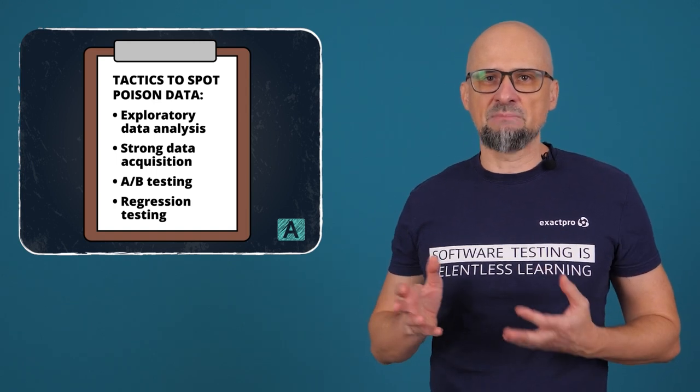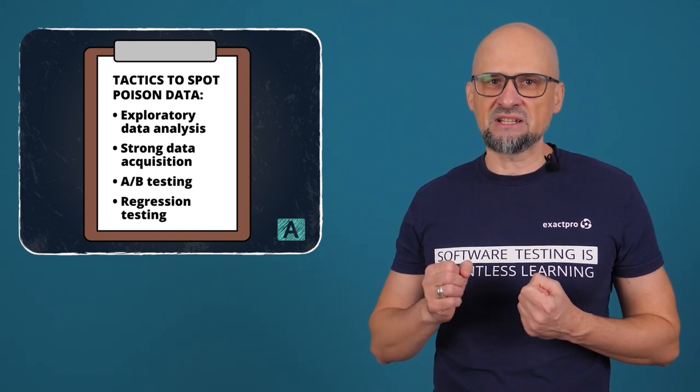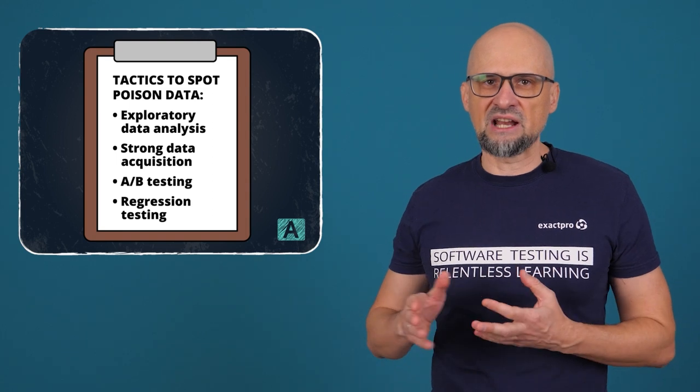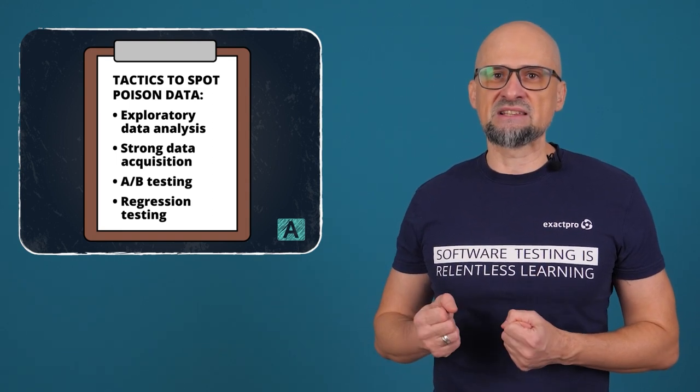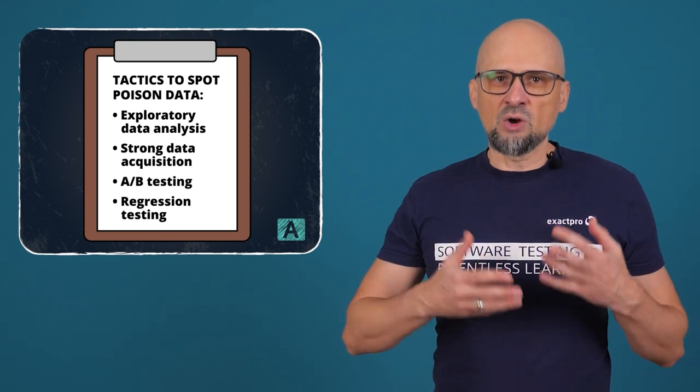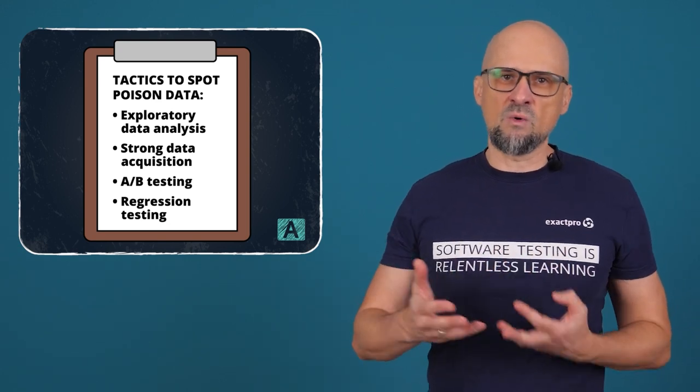We can try using A/B testing to check that the updated version of the system is closely aligned with the previous version. In addition, regression testing of the updated system with a trusted test suite could potentially detect if a system was poisoned.